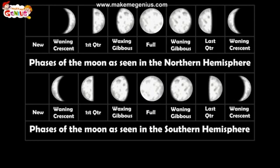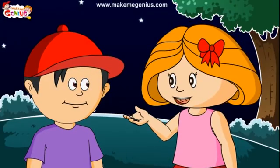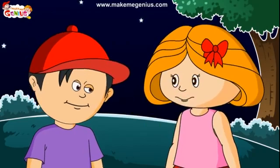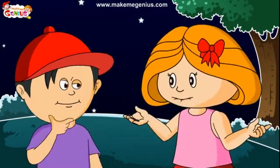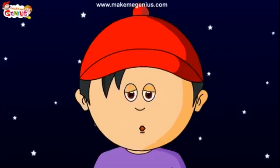The revolution of the moon around the earth makes the moon appear as if it is changing shape in the sky. From the earth, we see the moon grow from a thin crescent to a full disk and then shrink back to a thin crescent again before vanishing for a few days. Let us wear our astronaut suits and go to the sky to understand the different phases of the moon.